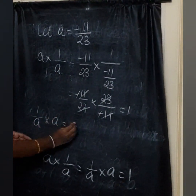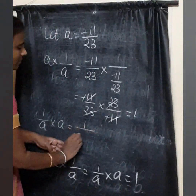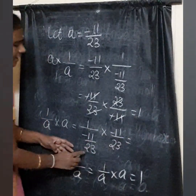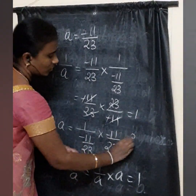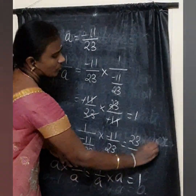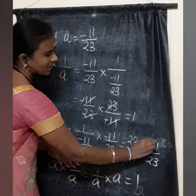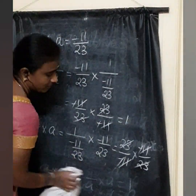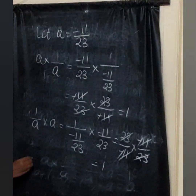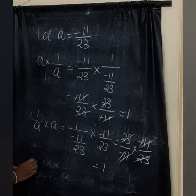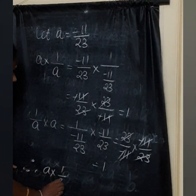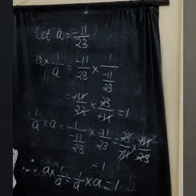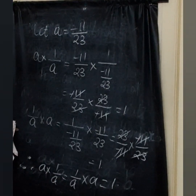Next, 1 by A into A is 1 by minus 11 by 23 into minus 11 by 23, which is 23 by minus 11 into minus 11 by 23. Minus minus cancels, 11 and 11 cancel, 23 and 23 cancel — the answer is 1. Therefore A into 1 by A equals 1 by A into A equals 1. It satisfies the multiplicative inverse property.